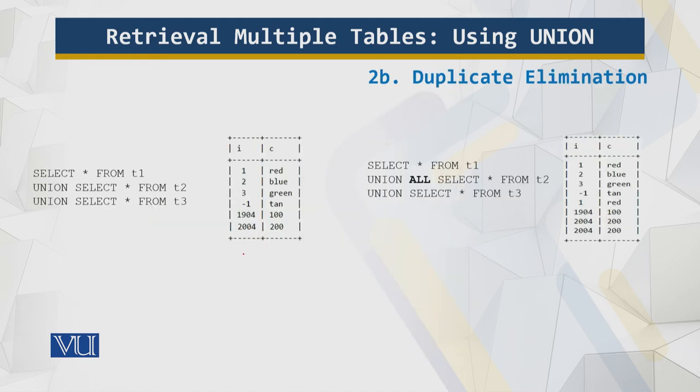Now duplicate elimination. By default, UNION eliminates duplicate rows from the result set. There are no duplicates. t1 and t2 both have a row containing values of 1 and red, but only one such row appears in the output. Also, t3 has two rows containing the date 2004-01-01 and 201, of which one has been eliminated.